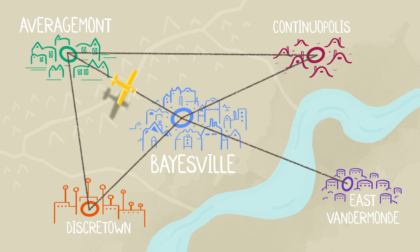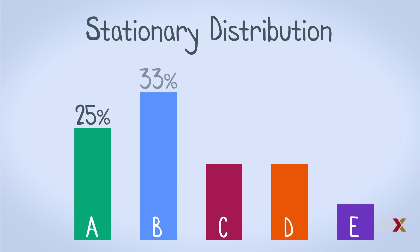We are showing one particular run of the simulation, but Anna's process will always converge to the same stationary distribution no matter which city she starts out in.